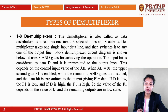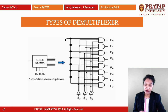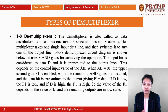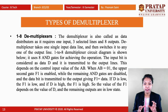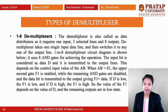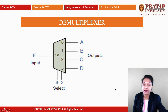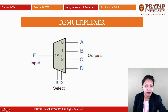In the 1-to-8 demultiplexer circuit diagram, eight AND gates are used to achieve the operation, giving outputs F0 through F7. The input bit is considered as data D and is transmitted to the output line depending on the control input value of AB. When AB is 00, the first gate F0 is enabled while all remaining AND gates are disabled. For AB = 01, only the second gate is enabled; for AB = 10, the third is enabled, and so on.